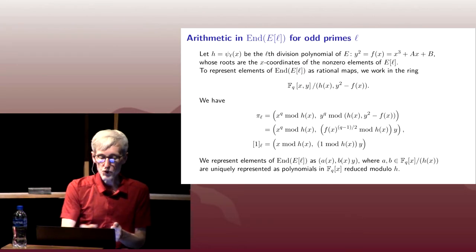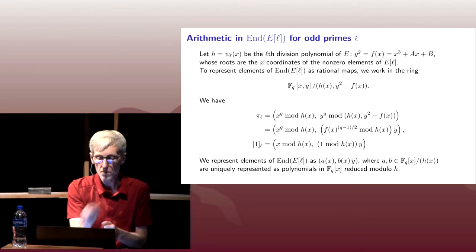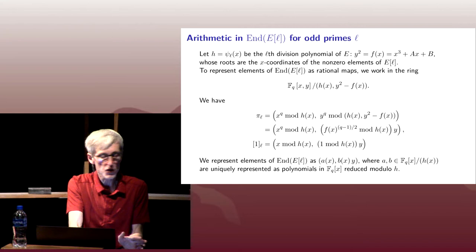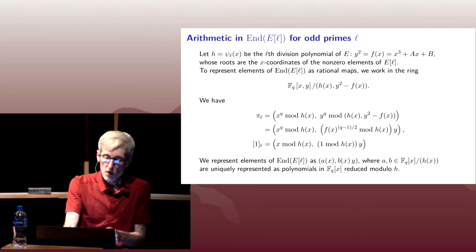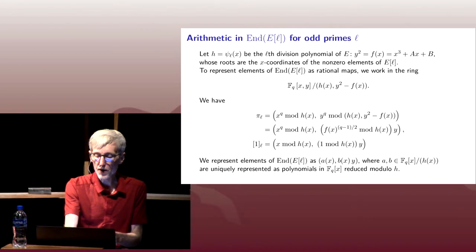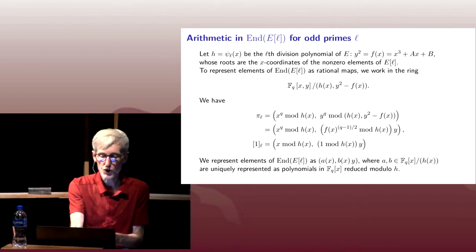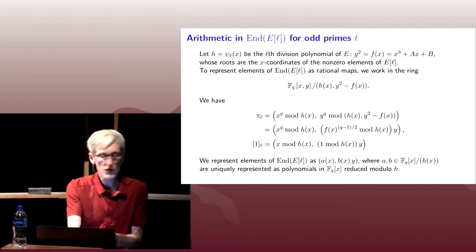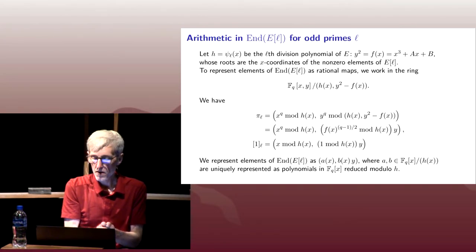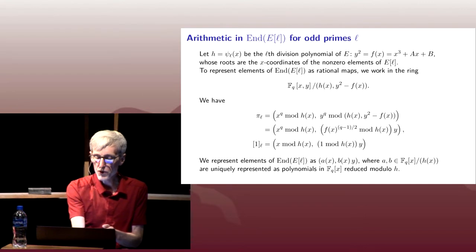But we want to work in this quotient ring. So we're going to take X to the Q and need to reduce modulo this ideal. But in fact, since we only have an X here, it's enough to just reduce mod H. For our Y to the Q, we're going to first take advantage that Y^2 equals F(X) in our quotient ring. So we're going to replace Y^Q, Q is odd, with F(X)^((Q-1)/2) times Y.